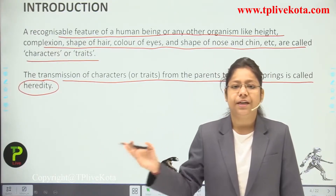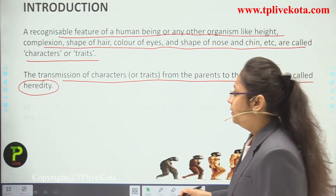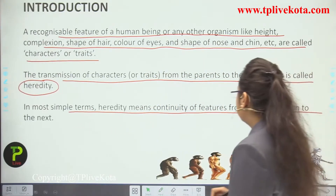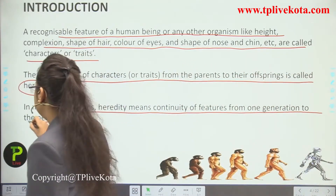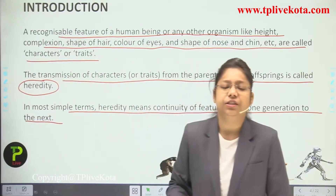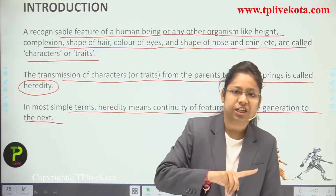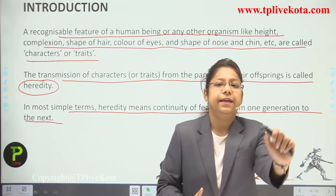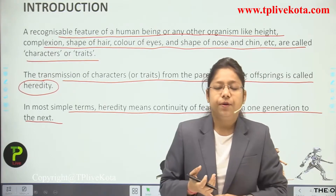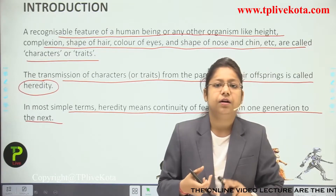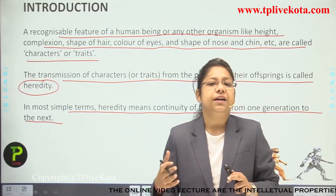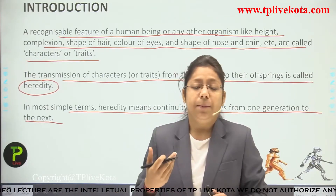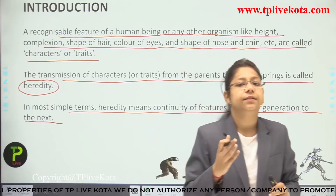Characters like eye color and complexion are transferred from a parent to the offspring. In the most simple terms, heredity means continuity of features from one generation to the next. Features like height, complexion, hair color, and eye color are all transferred from one generation to another because parents carry the genes for all these traits.